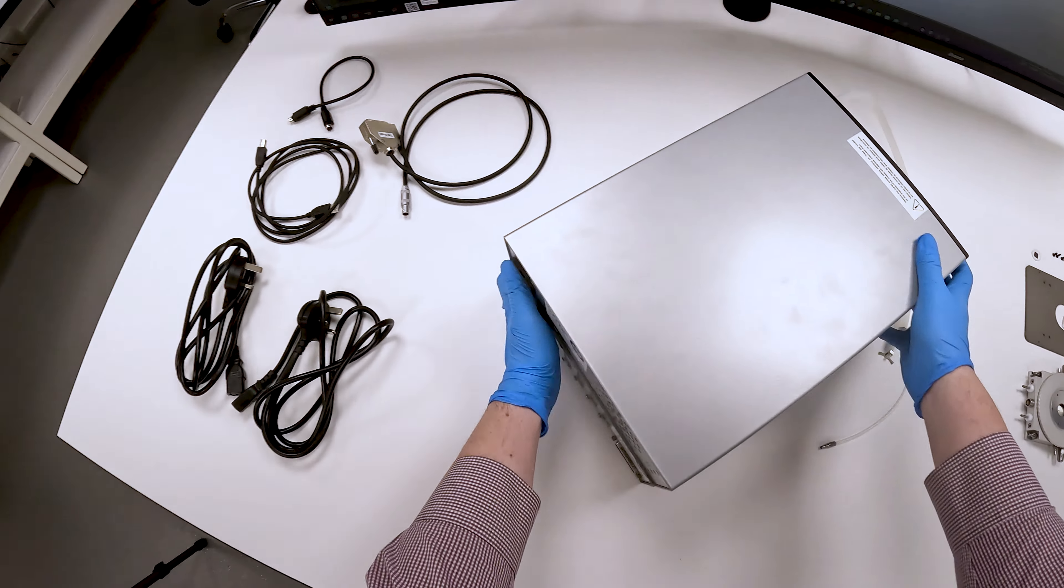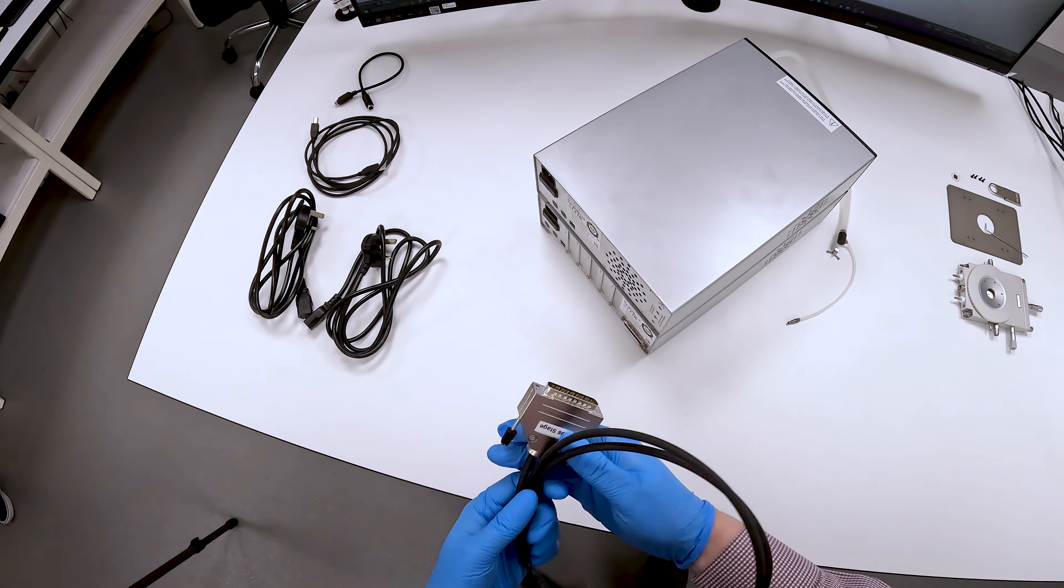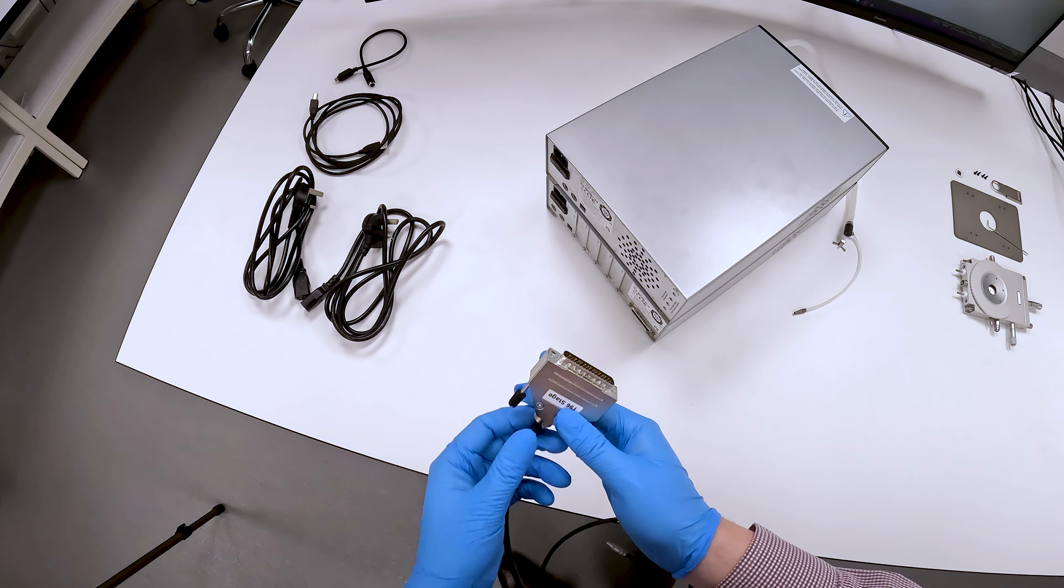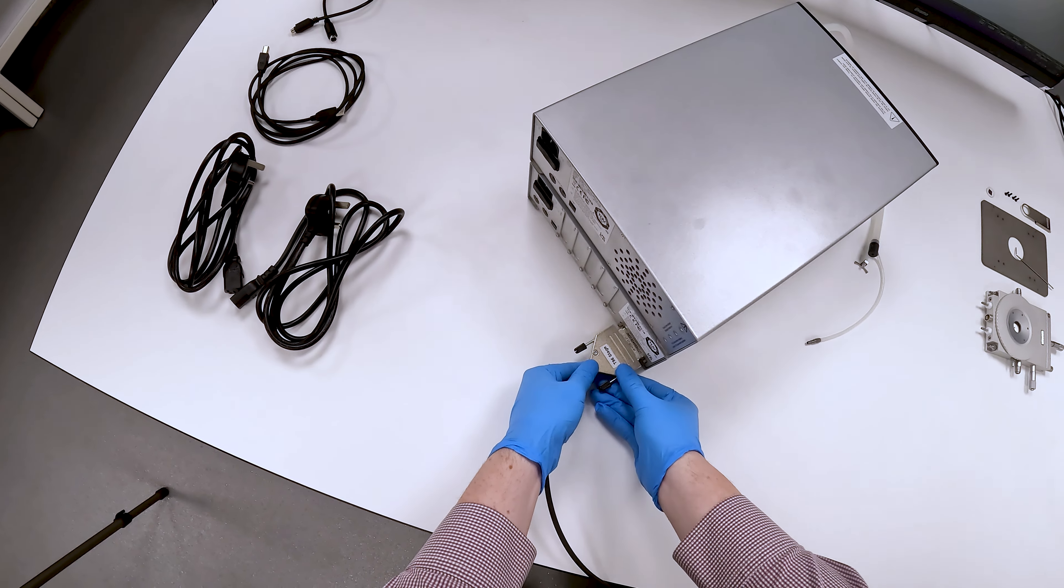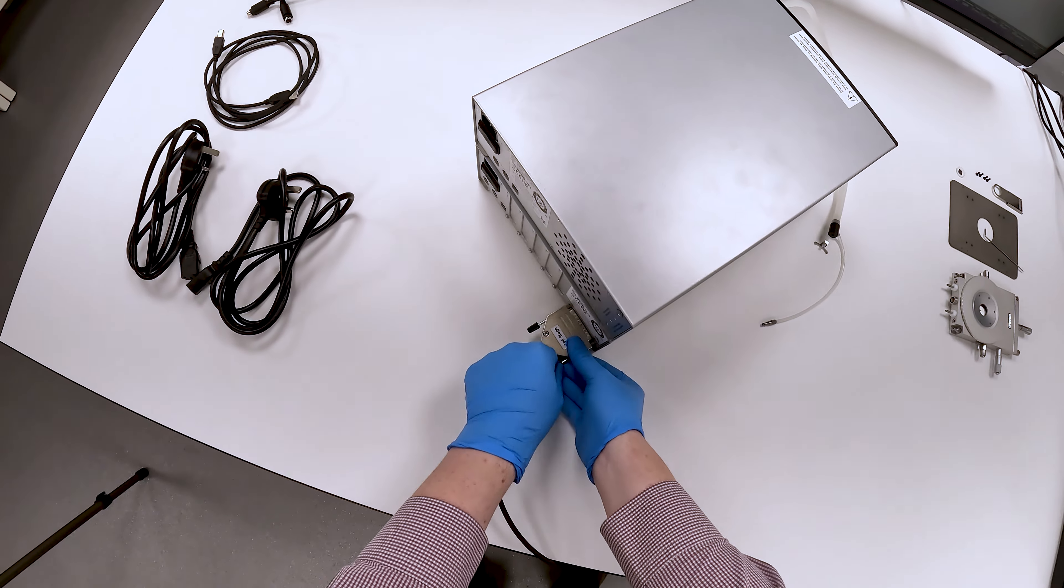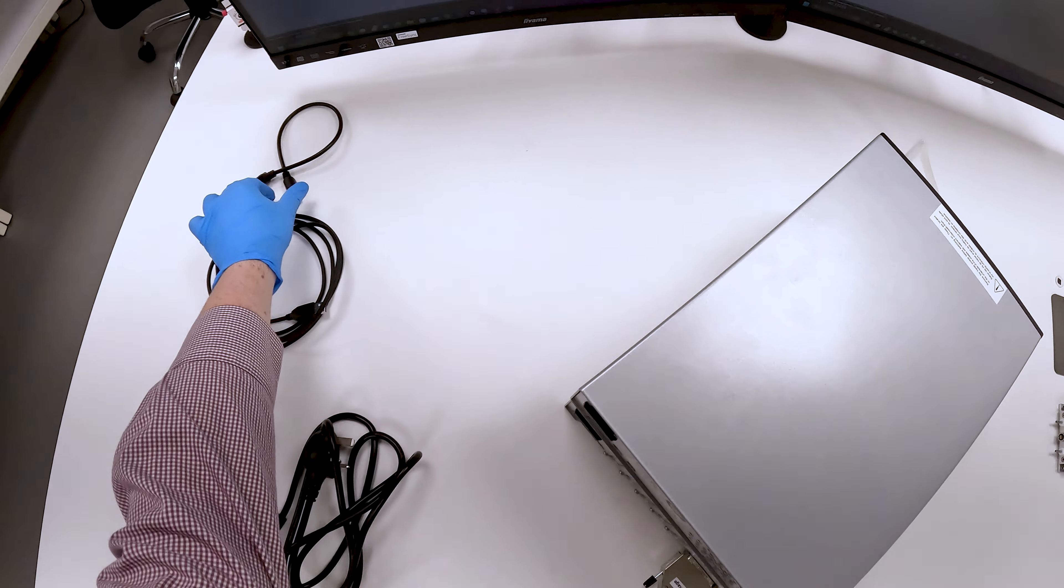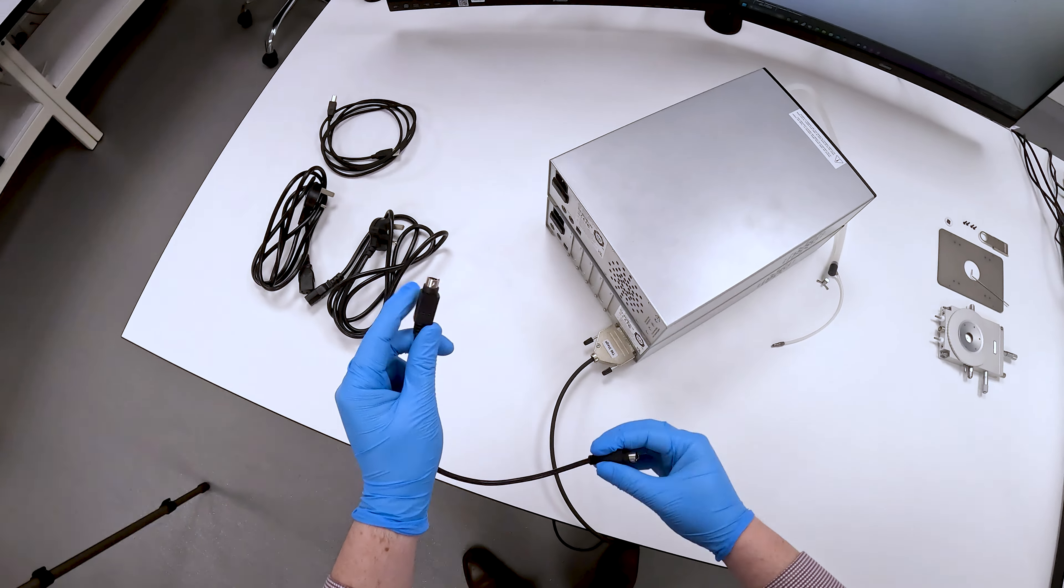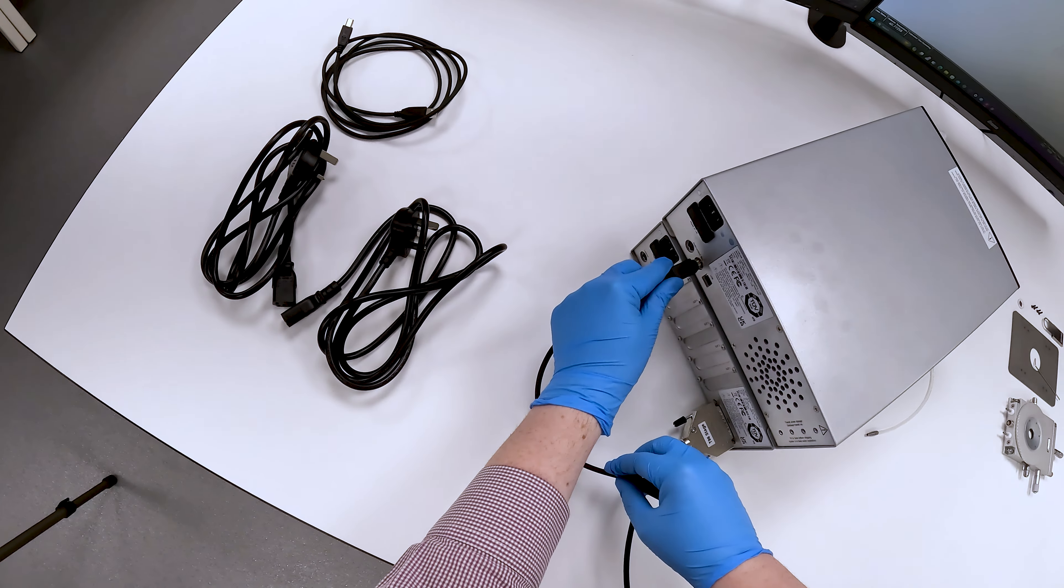The various electrical cables in your Linkam system can now be connected. These include the stage lead which goes into the T96, and the connector between the T96 and the LNP96.